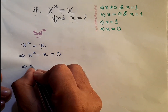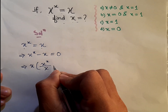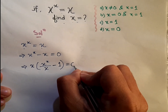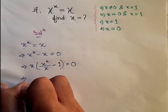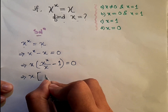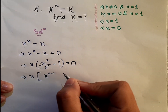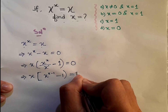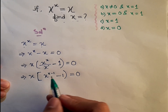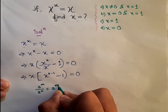We take x as a common factor. Dividing inside by x, we are left with x to the power x minus 1, and we take out one as the remaining term. We use the formula a to the power m divided by a to the power n equals a to the power m minus n.